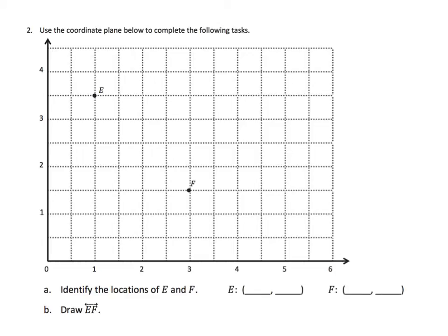So let's locate points E and F. I have my point E. I'm going to do it a little bit differently this time. I'm going to start on my E and trace down to my X axis, and I see that I have a 1. And I'm going to do the same thing this time. I'm going to start on my E and go horizontally over to my Y axis. Because I see I'm between 3 and 4, that would be 3 and 1 half.